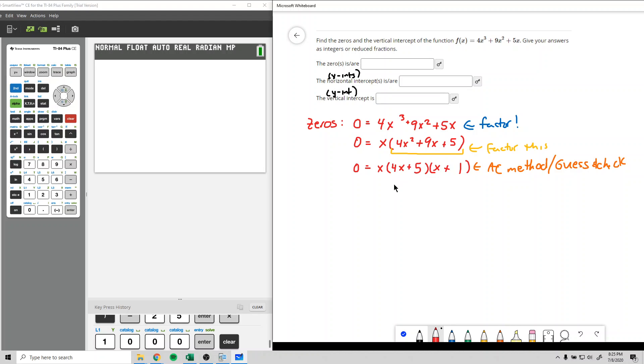Alright, but now that we've got it factored, we've got to set each part equal to 0. So we've got 0 equals x. Don't forget about the front. We've got 0 equals 4x plus 5. And we've got 0 equals x plus 1.